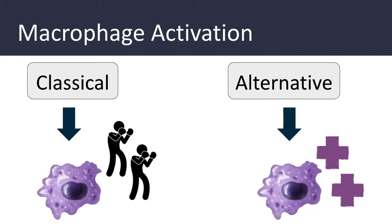The main function of alternatively activated macrophages is tissue repair, accomplished through the secretion of growth factors to promote angiogenesis, activation of fibroblasts, and stimulation of collagen synthesis — all important processes for healing and features of chronic inflammation. It would make sense that the classical pathway occurs first to destroy the offending agent, followed by the alternative pathway to initiate tissue repair. However, this precise sequence is not well documented, and it is more likely that both pathways are occurring simultaneously.